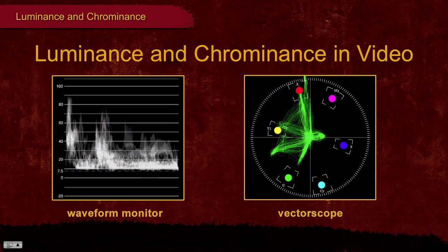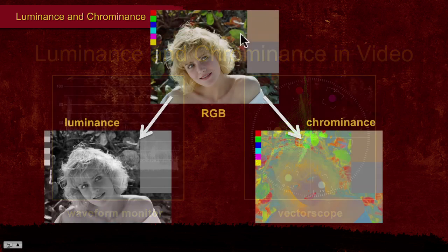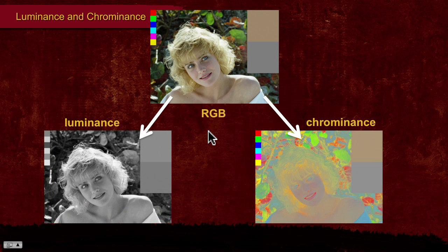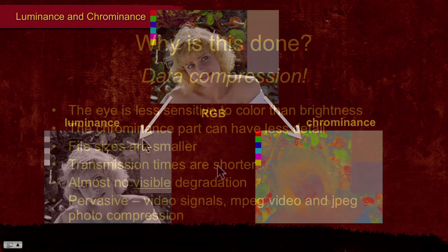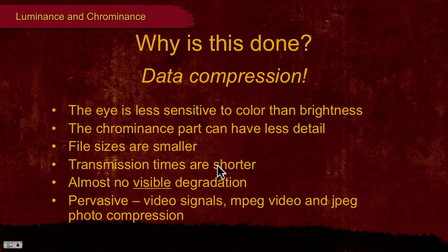You will learn why luminance and chrominance are absolutely fundamental concepts that show up not just in video, but in color correction and many compression schemes like JPEGs for photos and MPEG for videos. We will also learn about lossy and lossless compression schemes and how to use them to protect the color of your images.